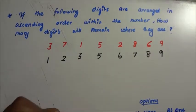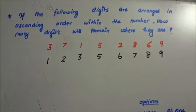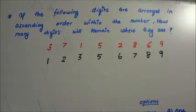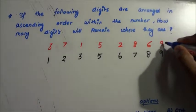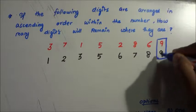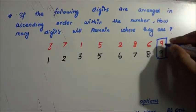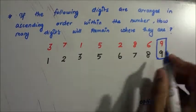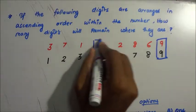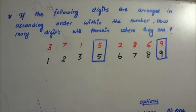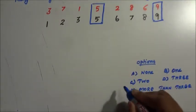Now check how many digits will remain where they are. The digit 9 does not change its place. Likewise, number 5 also remains. So the answer is 2.